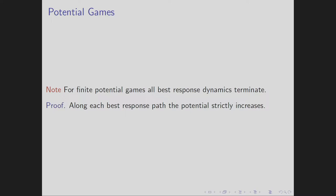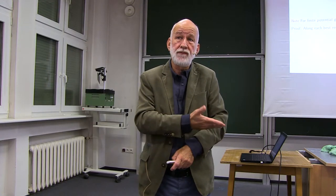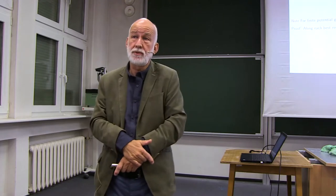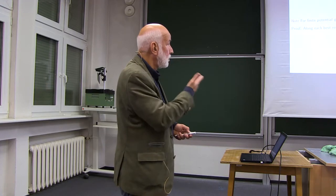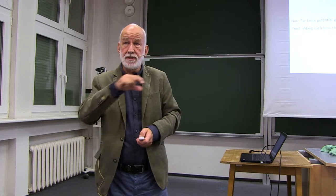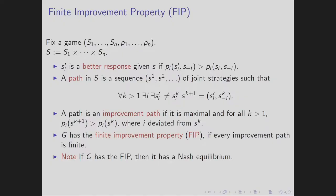If it were not a Nash Equilibrium, some player could choose a better strategy, moving to a higher potential — but we already chose a joint strategy maximizing the potential, contradiction. In short: if a game has a potential and is finite, then every maximum of the potential is a Nash Equilibrium. The game with the bad Nash Equilibrium at E,E with payoff minus one, minus one is a game without potential.